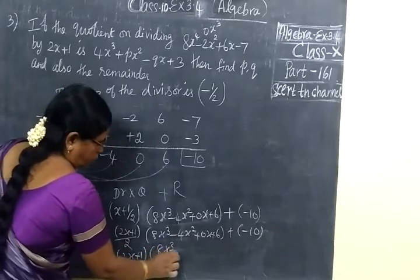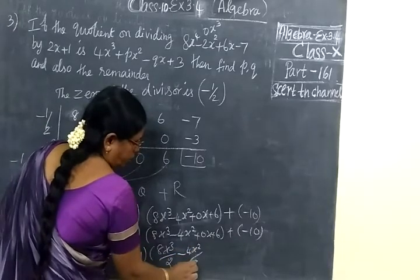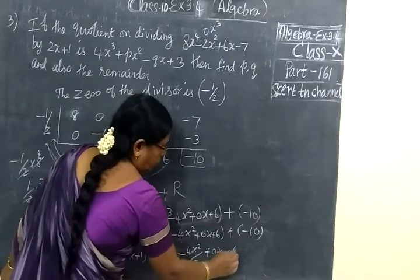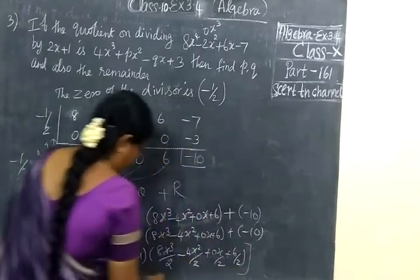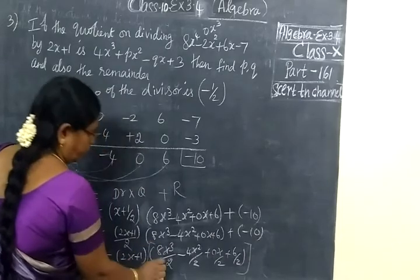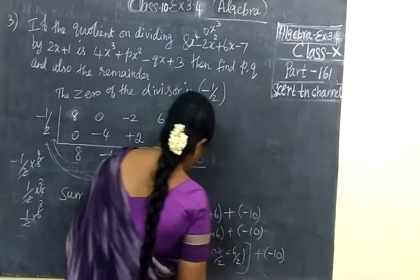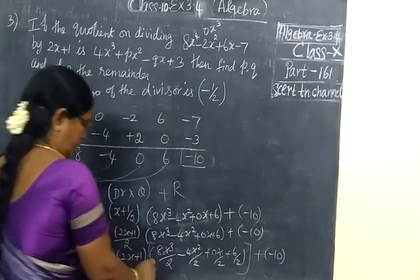Take 2 to all the terms. 8x cube by 2, minus 4x squared by 2, then 0x by 2, then 6 by 2. I already told you only for this term minus 10, this is the denominator.